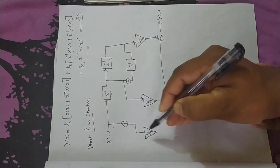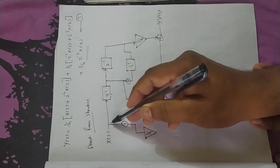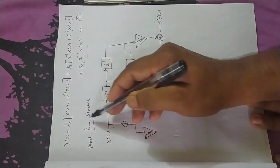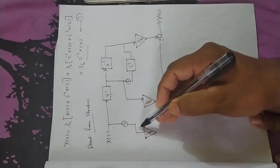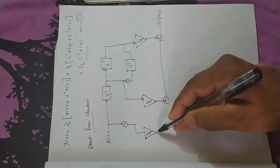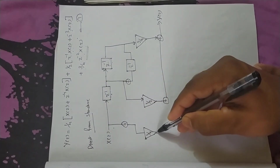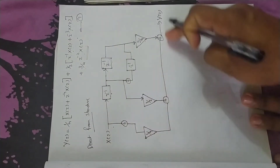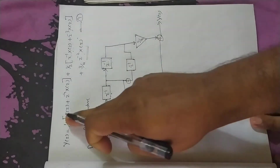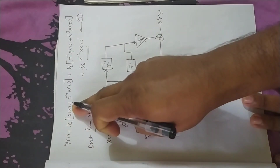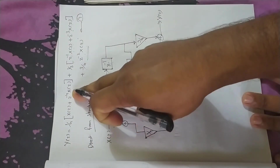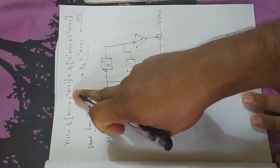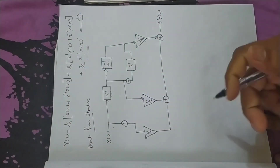We will take a 1/4 X(z). 1/4 X(z). That is why we have to do this. We will take a 1/4 X(z). Now, z raised to minus 4 X(z).